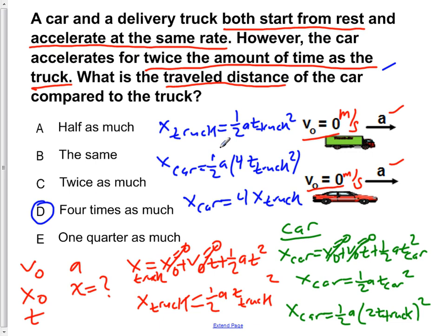So the answer is D. The trick here is when you're squaring this, don't forget you have to square both parts. The two has to be squared and also the time that the truck travels for. That's where you get four and t truck squared.